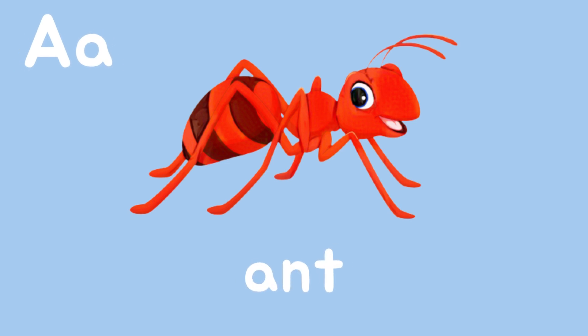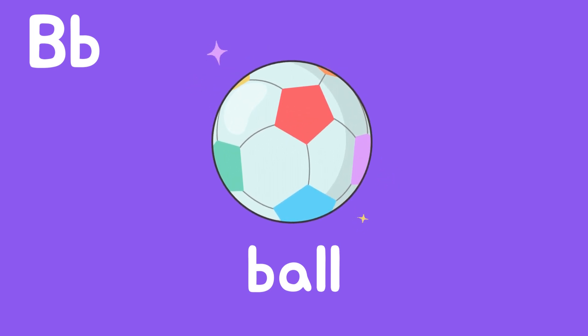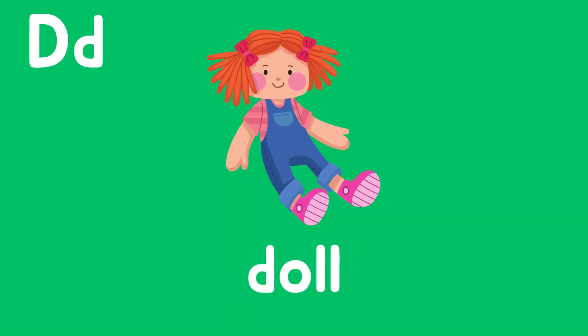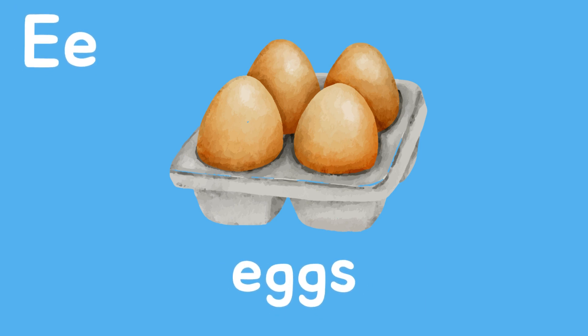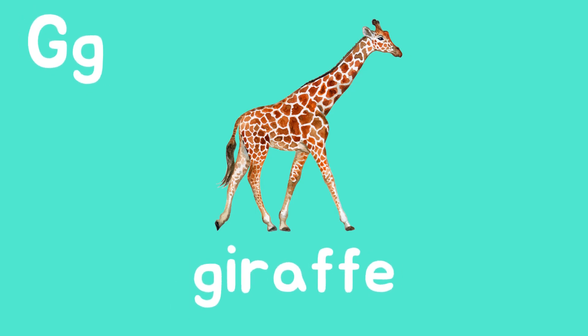A is for Ant. B is for Ball. C is for Cat. D is for Doll. E is for Eggs. F is for Fan. G is for Giraffe.